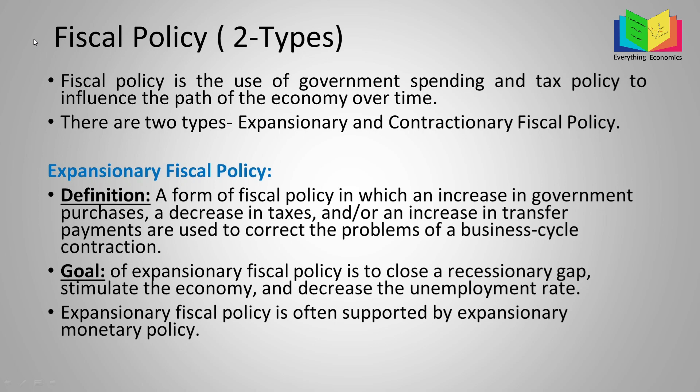The government has two types of policies: monetary policy and fiscal policy. Monetary policy involves the use of money supply to achieve its aims. The aim could be to reduce the unemployment rate, increase aggregate demand in the economy, or reduce inflation. To achieve those aims, the government uses either monetary policy or fiscal policy. In monetary policy, the government increases or decreases money supply to achieve its target.